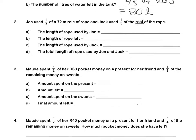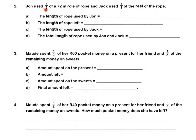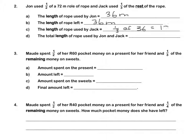Question 2. John used 1 half of a 72-metre roll of rope and Jack used 1 third of the rest of the rope. The length of rope used by John: 1 half of 72 metres is 36 metres. The length of rope left: if 36 metres were used, 36 metres are left. Jack used 1 third of 36 metres, which gives us 12 metres.